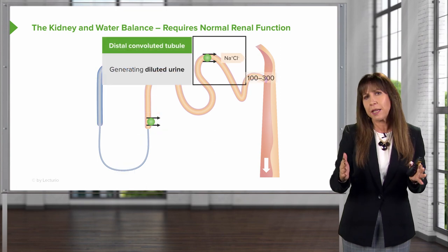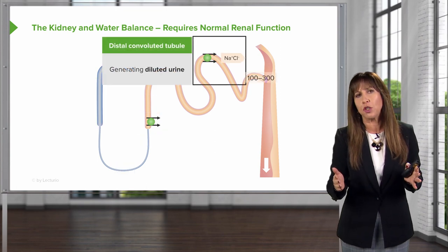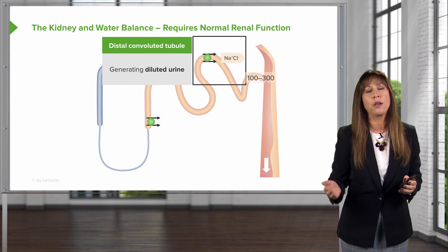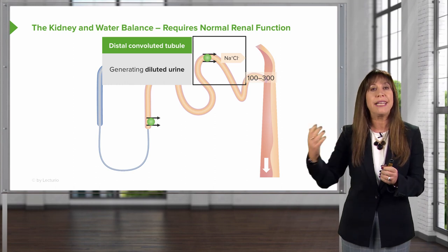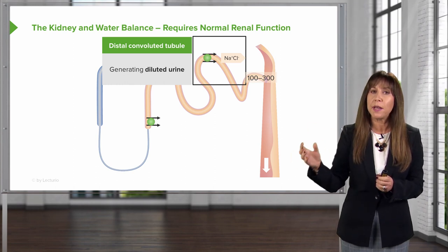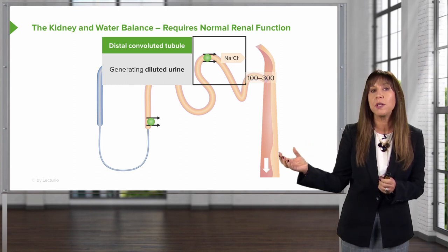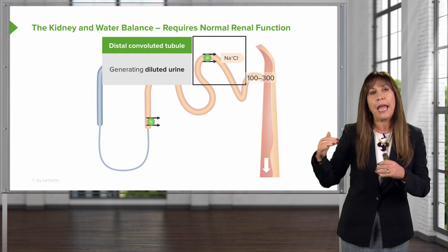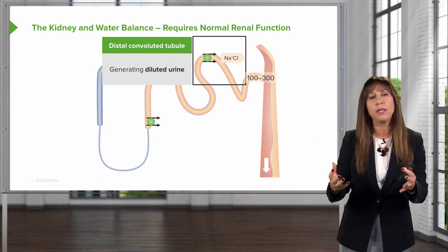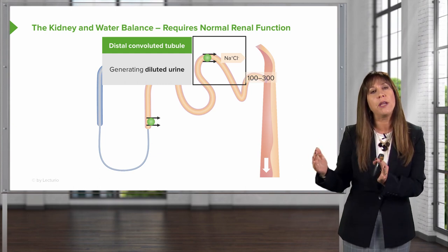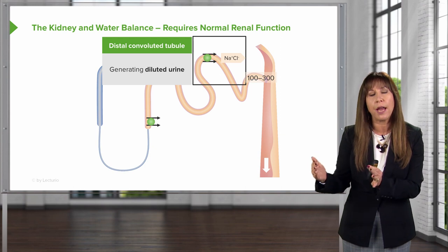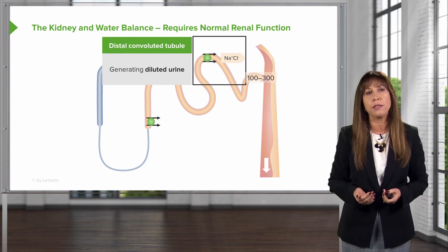The next segment to pay attention to is the distal convoluted tubule and early collecting duct, which will again reabsorb more sodium chloride at that sodium chloride co-transporter and is also impermeable to water. So it generates a very diluted tubular fluid, or urine, at the top of the collecting duct.